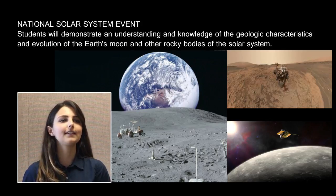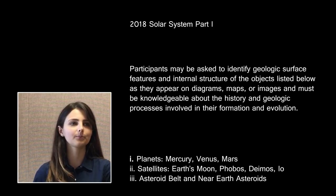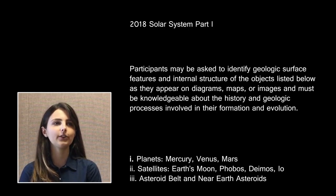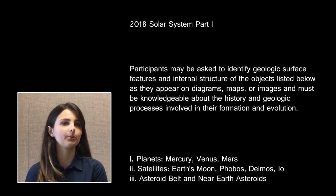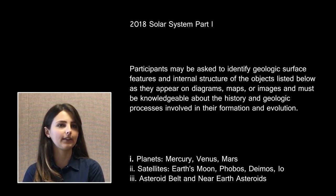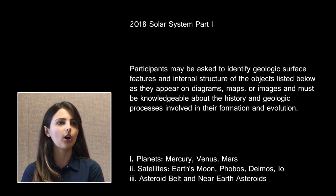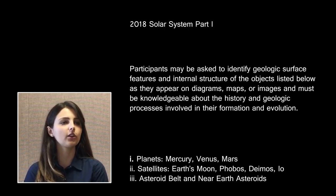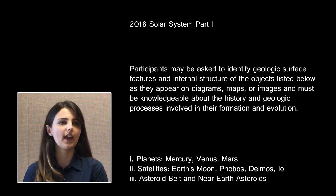The focus for part two of this event is demonstrating understanding and ability to apply knowledge of the physical and geologic processes associated with the solar system's geologic bodies, as well as the missions and measurements made by scientists to understand these objects. The objects included are the planets Mercury, Venus, and Mars, the moons of Earth and Mars, Jupiter's moon Io, and the asteroid belt and near-Earth asteroids. Students are expected to identify surface features by name and classification, be familiar with surface feature nomenclature systems, and understand the geologic history and formation of different surface features, as well as internal and external factors contributing to the evolution of these objects' surfaces.